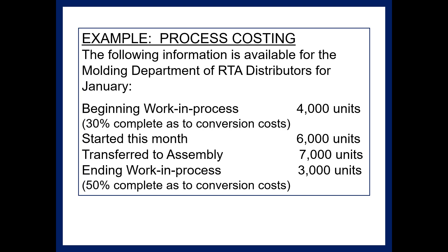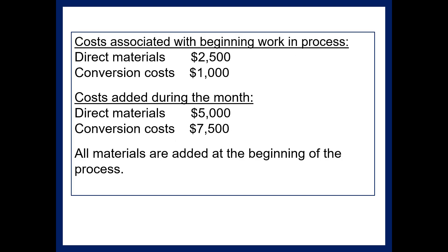Recall that conversion costs are direct labor and overhead costs combined. Cost associated with beginning work in process: direct materials, $2,500; conversion costs, $1,000. Cost added during the month: direct materials, $5,000; conversion costs, $7,500. All materials are added at the beginning of the process.